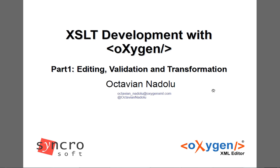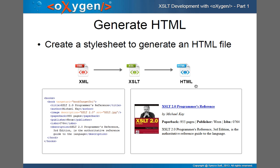Hello everybody, my name is Octavian. I'm a member of the Oxygen team for almost 10 years now and I work mostly on the XML development part in Oxygen. In this presentation we will focus on the editing, validation, and transformation features that we provide for XSLT. To exemplify these features in Oxygen I made a simple example. We have an XML file that contains a list of recommended books, and I want to create a stylesheet to generate an HTML file with those books.